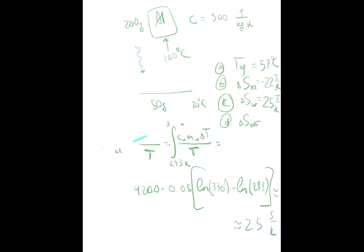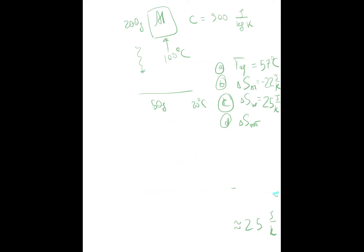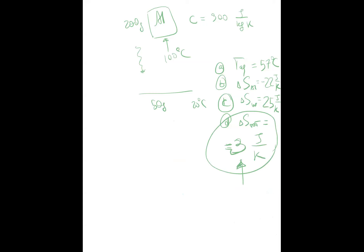The final question is easy: what's the total change in entropy? Aluminum lost 22 units of entropy and water gained 25 units. The total change in entropy is 3 joules per Kelvin — a positive number, meaning entropy went up. This is good; this is what we expected.